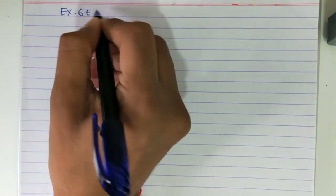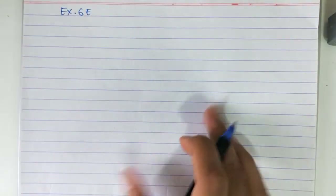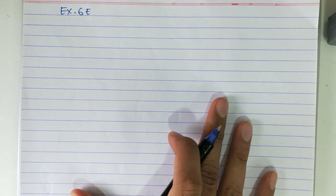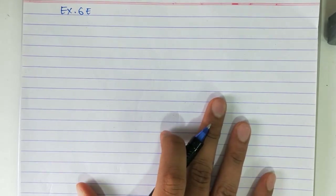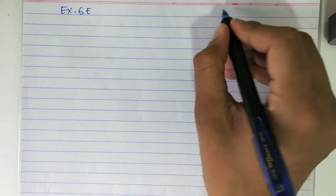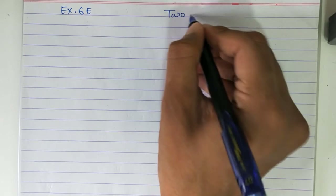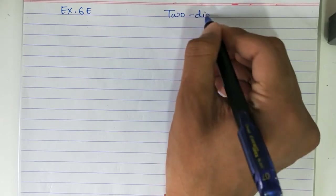Hello students, in the previous video we completed 11 numerical problems from exercise 6e. Let's continue with the remaining 7. The problems from 12 to 18 are based on two-digit numbers.